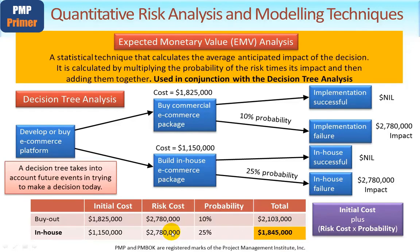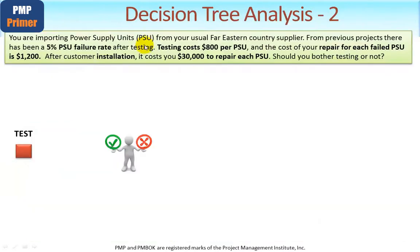Let's look at the second example, doing the math a slightly different way to reinforce this method. In this example, you're a company that imports power supply units — PSUs — from your usual Far Eastern country supplier. From previous similar projects, there has been a 5% PSU failure rate after testing. Testing costs $800 per power supply unit. For the 5% that fail, the cost of repairing them — because it would be too expensive to send them back to the Far East — is $1,200 per failed power supply unit.